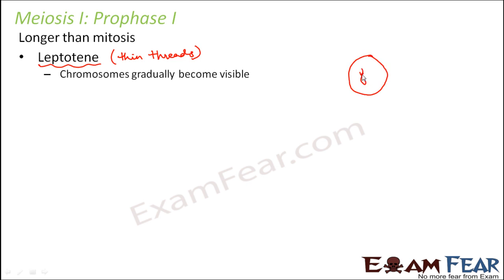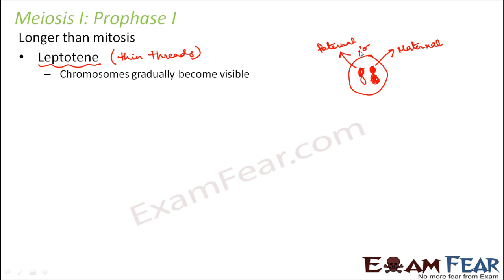Let us suppose this is your cell — you basically have two chromosomes. Both of them are different because we are talking about sexual reproduction: one is received from the father (paternal) and the other from the mother (maternal). So here the chromosomes become visible, and the nuclear membrane, nucleolus, and all those things disappear. Centrioles also migrate to opposite poles.